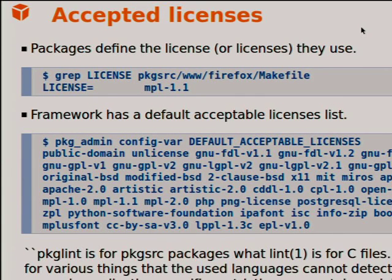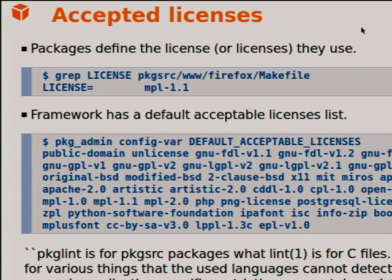Another interesting feature: many pkgsrc packages define the licenses they are associated with. You can view a list of default acceptable licenses. You can define which licenses you want to support, both for the package binary tools and when building from pkgsrc source. This is really useful because you can be restrictive or more open depending on your developer or production environment rules.